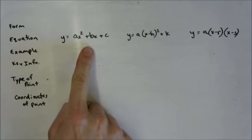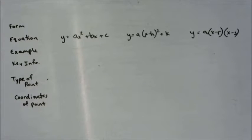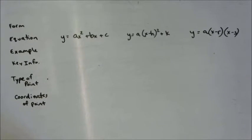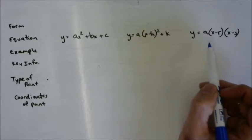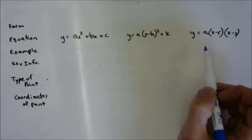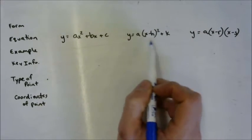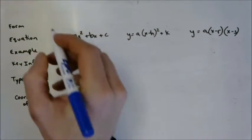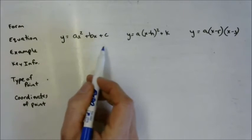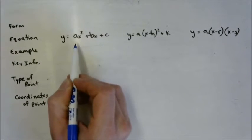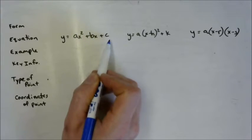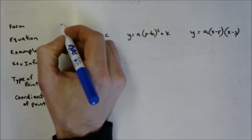What is this? There's a hint — this is probably the easiest one to remember. This is the one you spent a lot of time with. This guy is standard. Anytime you see something in order like a, b, c — x squared, then x to the power of 1, then x to the power of 0 — this is standard.